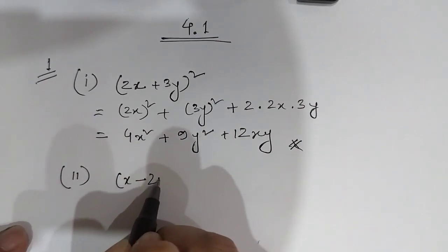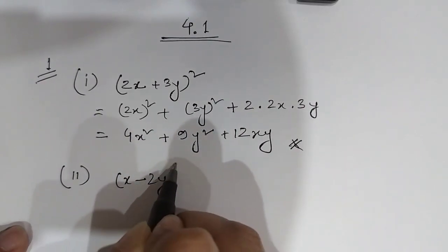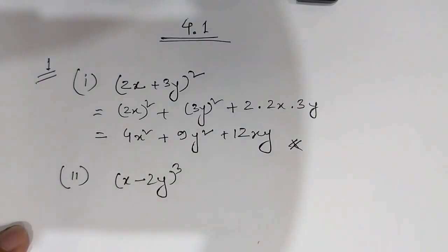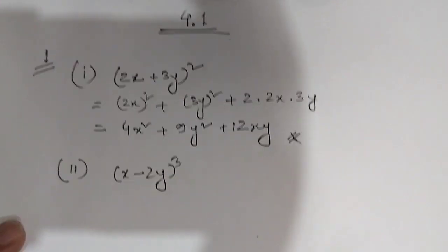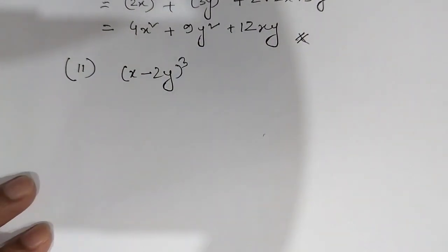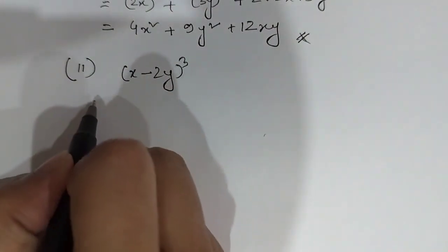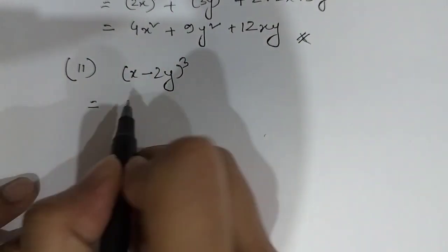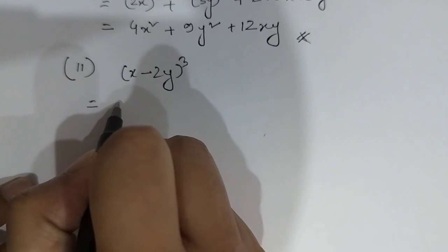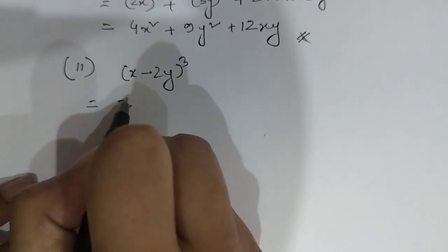So I am going to do it in the first class — the whole question. So, what is the formula? The a minus b whole square formula.